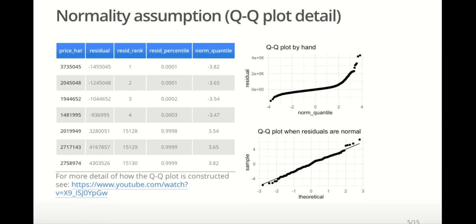The table above shows a sample of the house price data set that was used to fit the linear model that uses square feet of living to predict sale price. The first column shows the fitted value, price hat, that is the value of price when we put the actual square footage into the model. The second column is the residual, actual price minus fitted price. The resid rank column is the residuals rank. The smallest is rank 1, the largest is rank 15,130, the size of the data set. The resid percentile column shows approximately the proportion of observations that are less than or equal to that residual. It is computed by dividing the residuals rank by n plus 1.